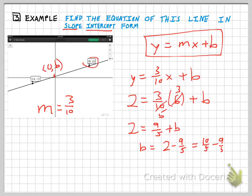And I've got a b-value of one-fifth. Matches my graph over there pretty well. And my final answer then is y equals three-tenths x plus one-fifth. So when you're given a line with two points on it, you should be able to find its slope and the equation in both point-slope form and slope-intercept form.